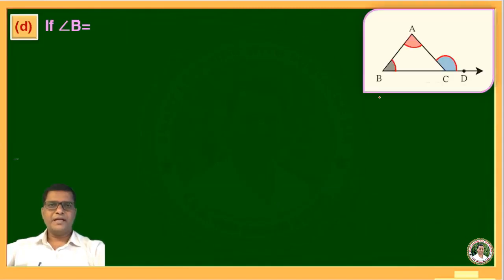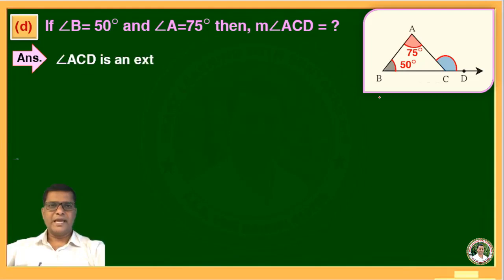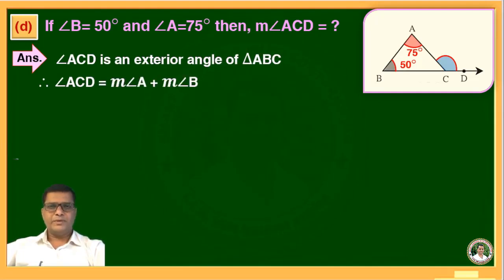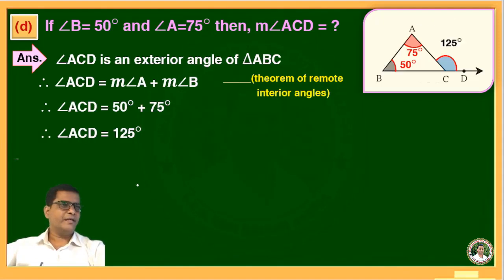Question D: if angle B equals 50 degrees and angle A equals 75 degrees, then find angle ACD. Angle ACD is an exterior angle of triangle ABC. Therefore, angle ACD equals angle A plus angle B, by the theorem of remote interior angles. Substituting: 50 plus 75 equals 125 degrees. So the measure of angle ACD is 125 degrees.